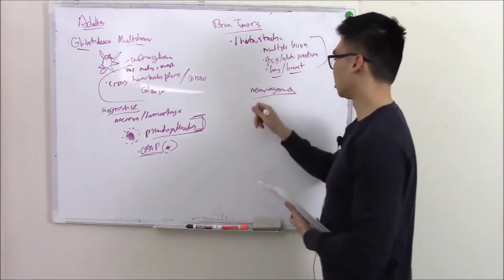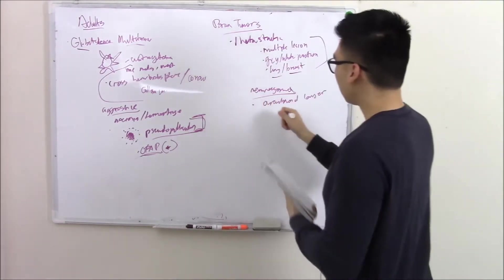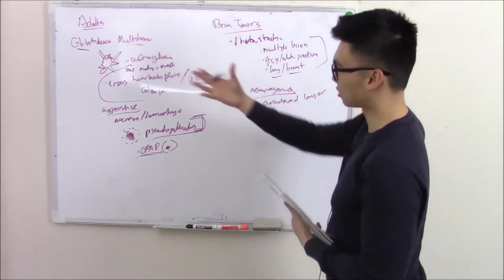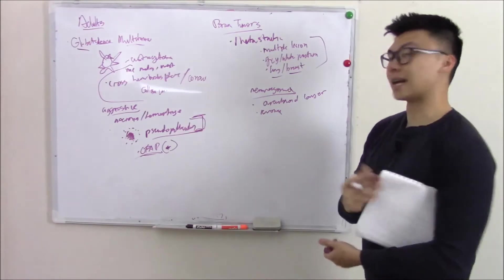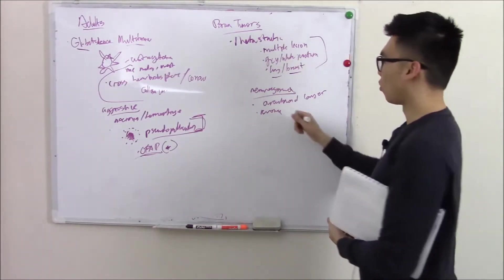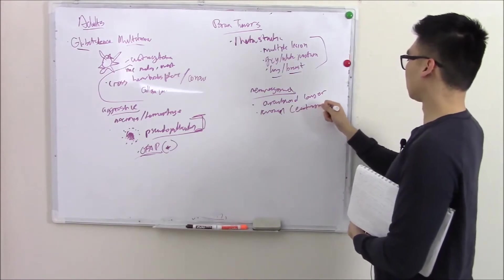This is usually involving the arachnoid layer. And it's more common than your astrocytoma. It's also more common in women because these tumors seem to express estrogen receptors. So you can imagine why it's more common in women. So I'll just write estrogen receptors.